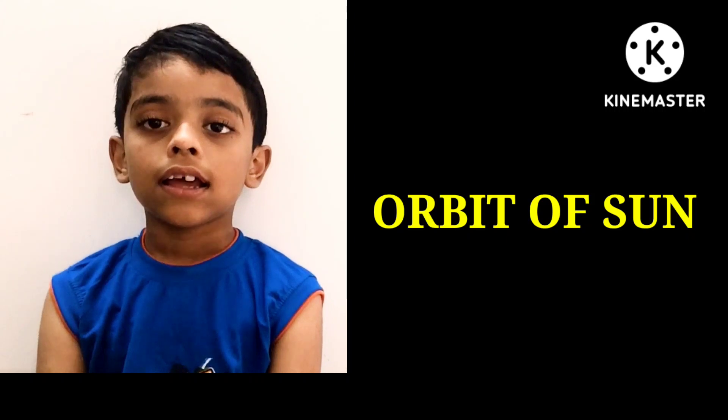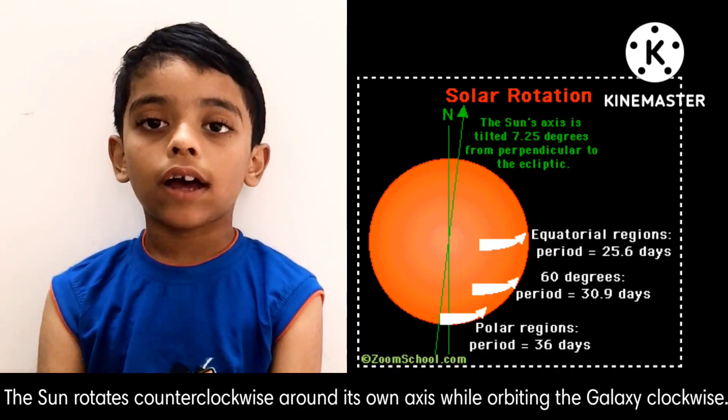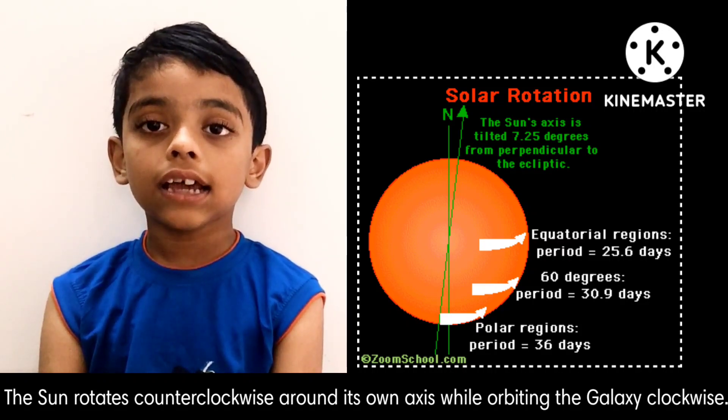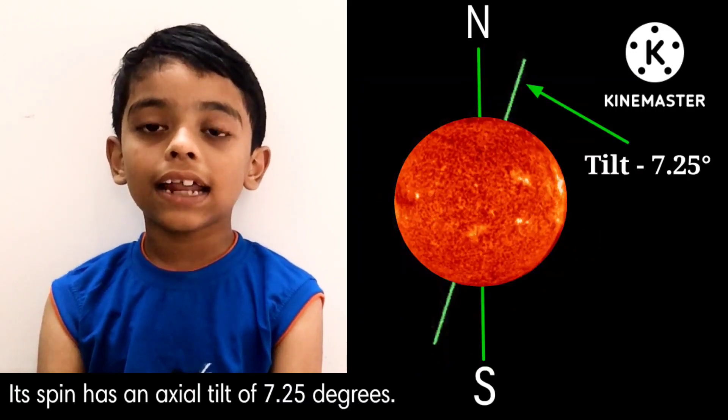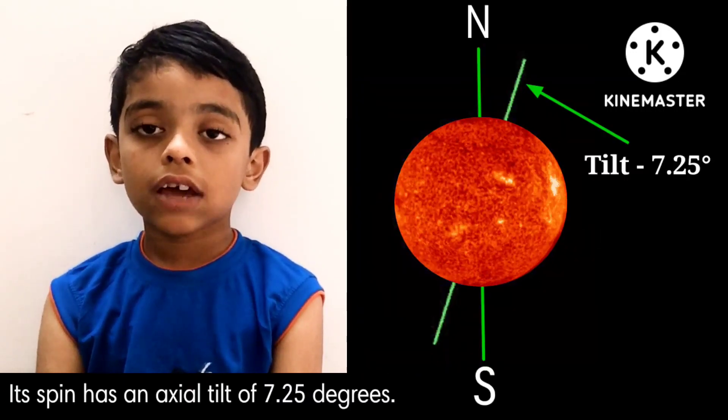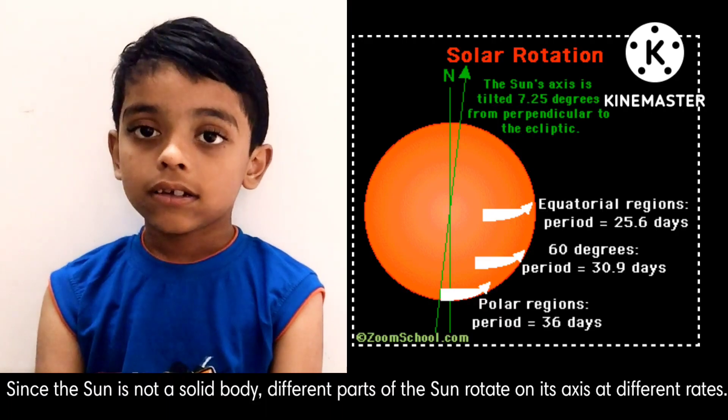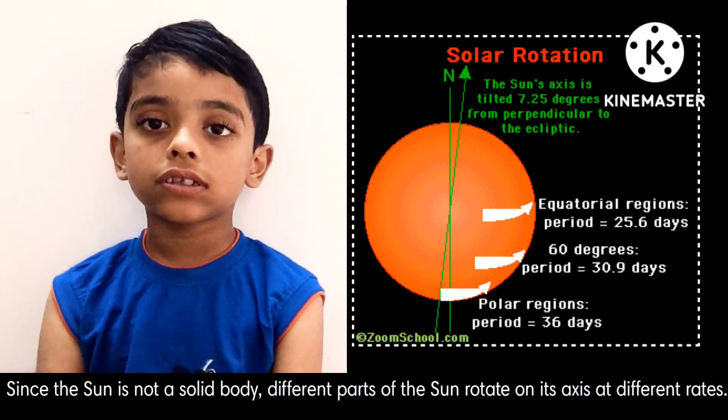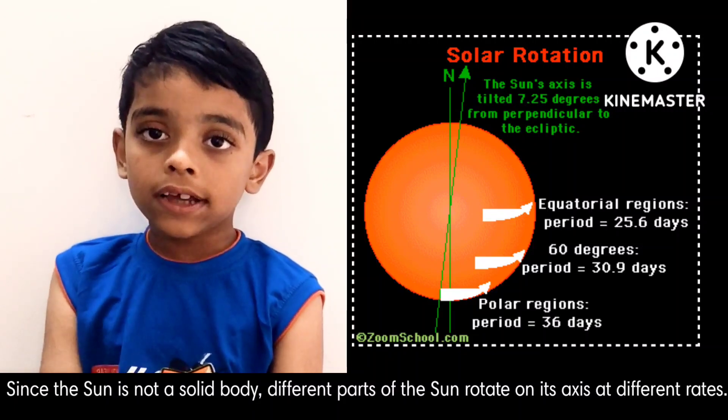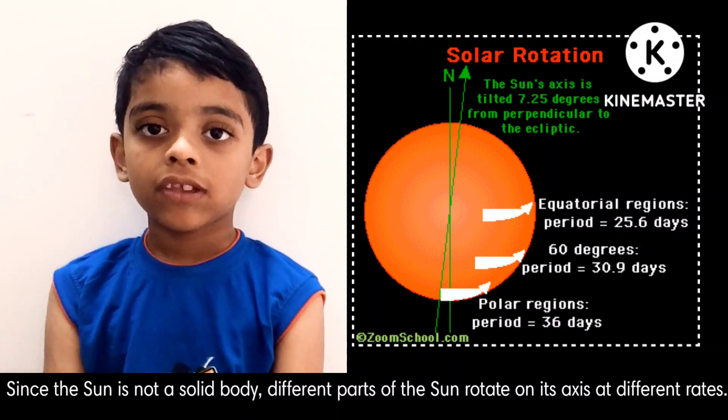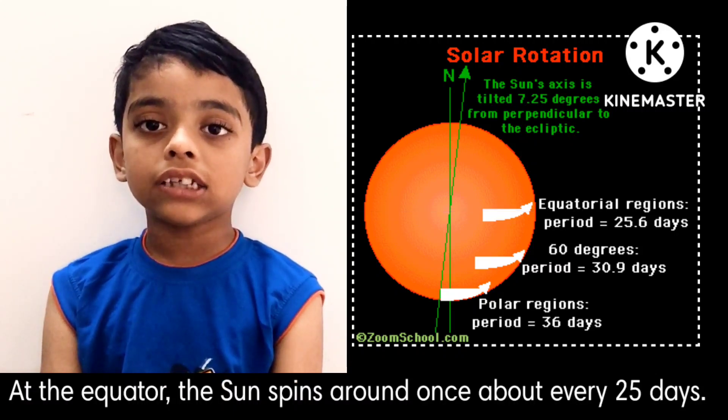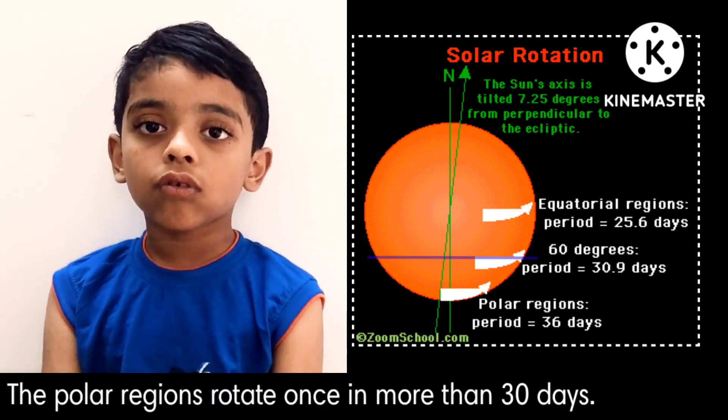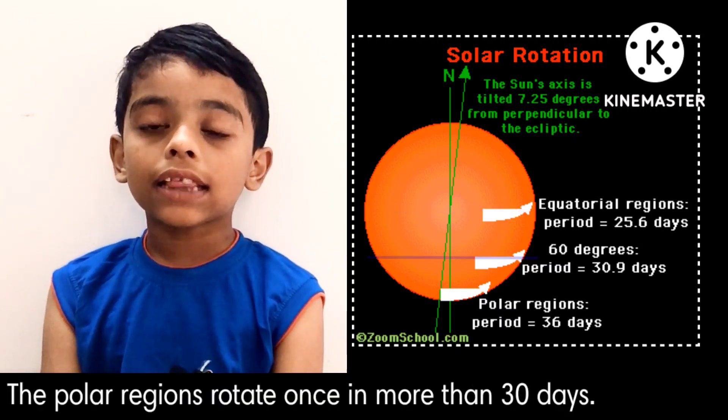Orbit of Sun: The Sun rotates counterclockwise around its own axis while orbiting the galaxy clockwise. Its spin has an axial tilt of 7.25 degrees. Since the Sun is not a solid body, different parts of the Sun rotate on its axis at different rates. At the equator, the Sun spins around once about every 25 days. The polar regions rotate once in more than 30 days.